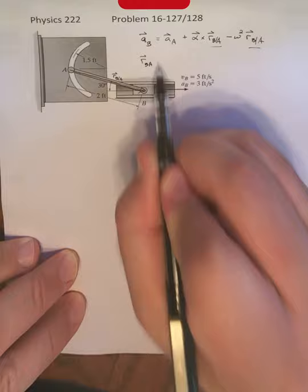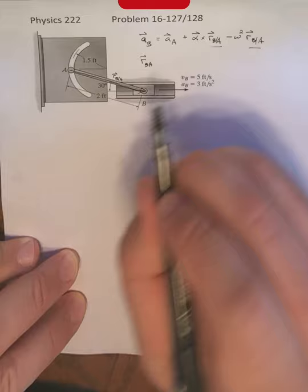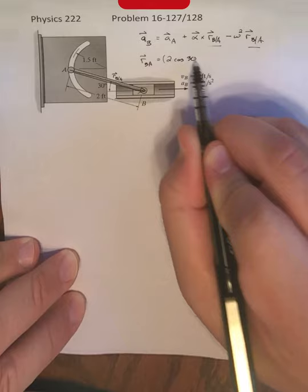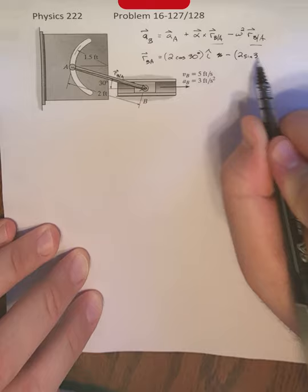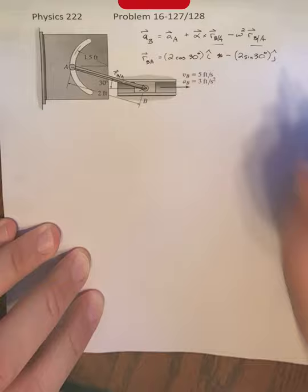Notice we have just a 60 degree angle, a 30 degree angle here. So our x component is going to be 2 times the cosine of 30 degrees i hat. It's pointing in the positive x direction, or I should say minus 2 sine 30 degrees because my y component is pointing downwards, from A to B, times j hat.